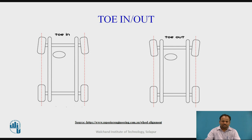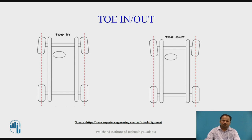We will also discuss suspension height. Suspension height is the distance measured from some specific point of the body frame or suspension to the ground. If it is not adjusted correctly, it can affect wheel alignment. Incorrect height can result from sagging coil or leaf springs, or incorrect torsion bar adjustment.